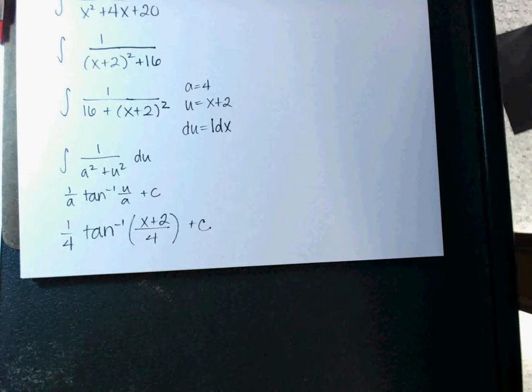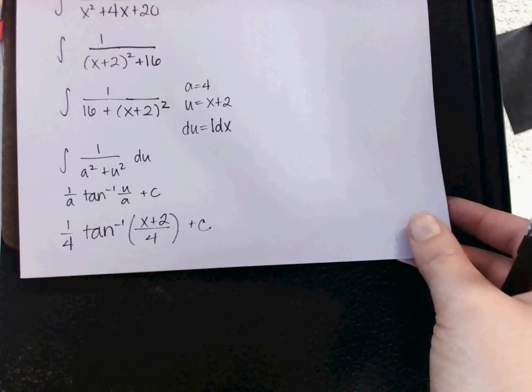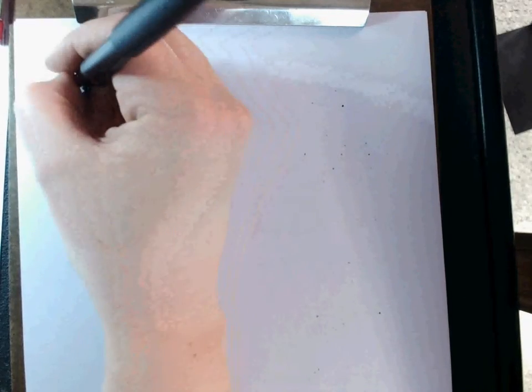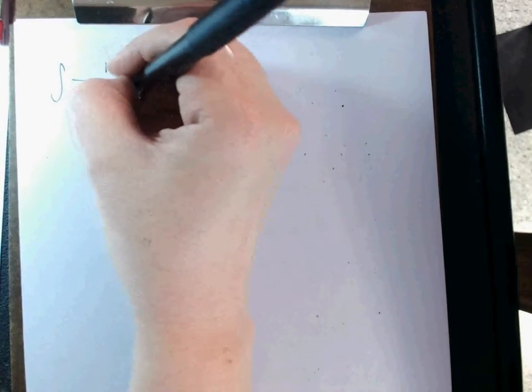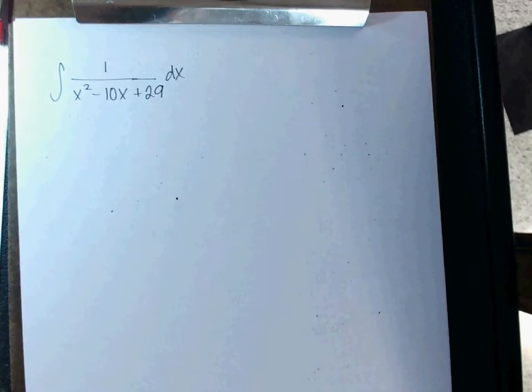Okay? We're going to do two more. And then I'll show you which two on your homework are complete the square. Ready? Alright, next one. Integral of 1 over x² minus 10x plus 29. Okay, complete the square on the bottom. What's going to go with x in the parentheses?